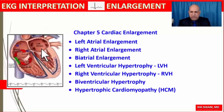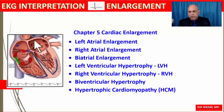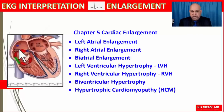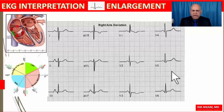Whenever we look at enlargement of a chamber, we should always keep in mind that these things do not happen in isolation. If we see left atrial enlargement, chances are high that we may also see changes in the left ventricle, right atrium, or right ventricle. Similarly, if we see changes in the right ventricle, we should also expect changes in the right atrium, as well as changes in the electrical axis of the heart based on which chamber is enlarged.